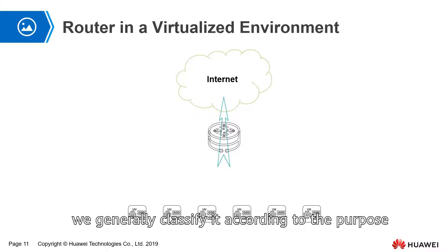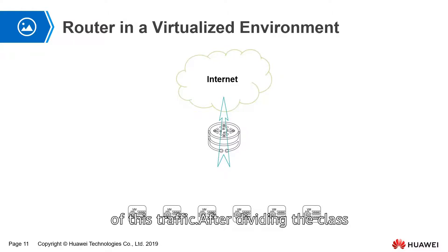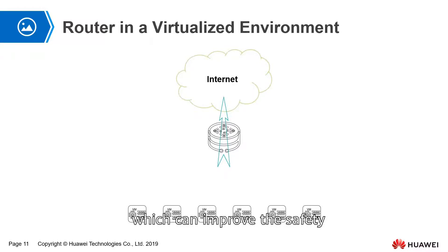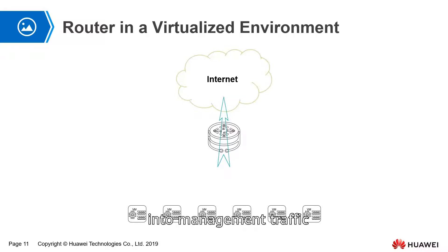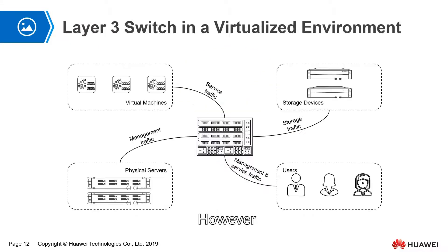In virtualization, we generally classify traffic according to its purpose. After dividing the class, we use VLAN to isolate it, which can improve security. Generally, we divide traffic into management traffic, business traffic, and storage traffic.